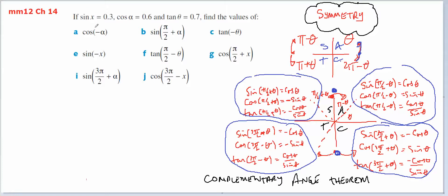Looking at the first one: cos of minus theta. Minus theta is measured away from 0 into the fourth quadrant. Cos is positive in the fourth quadrant, so that's going to be the same as cos of alpha, and cos of alpha will be 0.6.